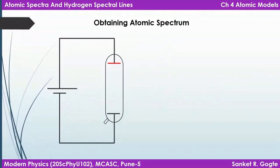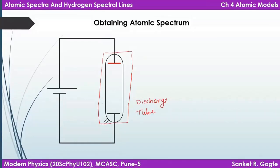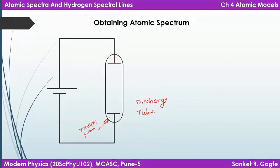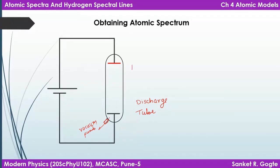Let's begin by considering how a spectrum is obtained. What you see here is a discharge tube, which is made of glass. It has a notch that can be connected to a vacuum pump so that vacuum can be created inside. Once the vacuum is created, the tube can be filled with any gas — here we will say hydrogen gas. The tube is first evacuated and then filled with hydrogen gas, but at very low pressure — it is rarefied gas inside the discharge tube.